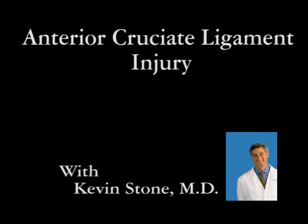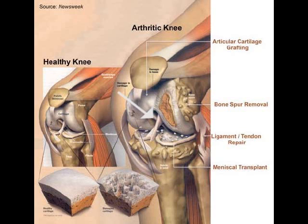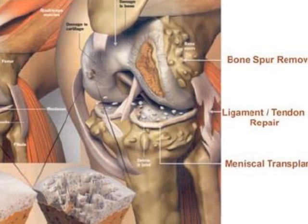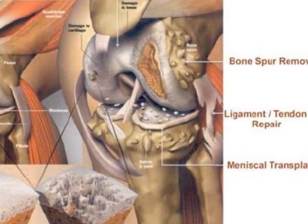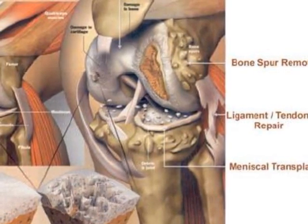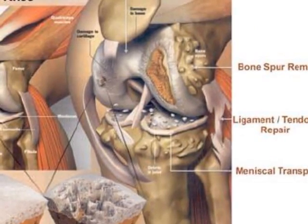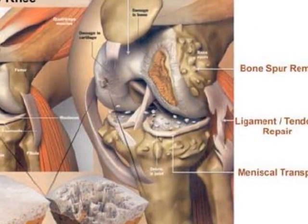Anterior Cruciate Ligament Injury. The anterior cruciate ligament is the key stabilizer of the knee, going from the back of the femur to the front of the tibia. It is ruptured commonly in sports with twisting motions, hyperflexion, and hyperextension injuries.